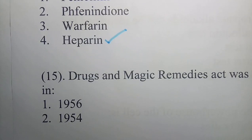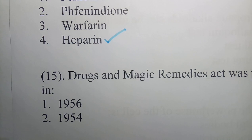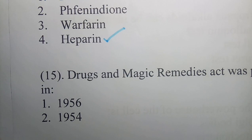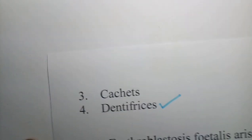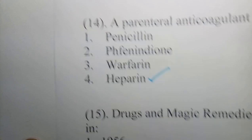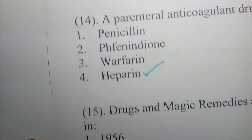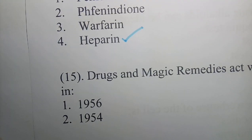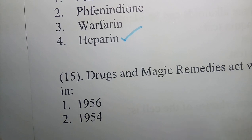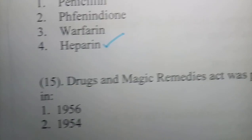Question 15: The Drugs and Magic Remedies Act was passed in which year? Options are 1956, 1954, 1952, 1953. The correct answer is 1954. The Drugs and Magic Remedies Act was passed in the year 1954.